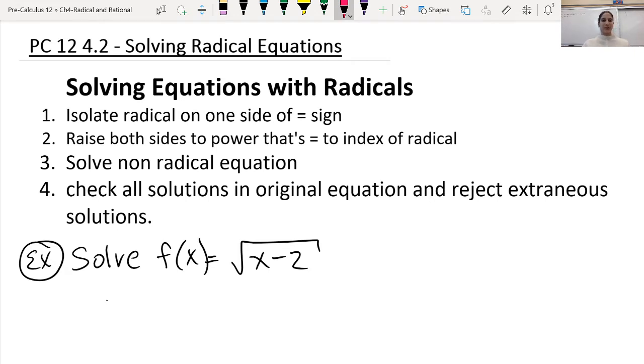We're going to start with the first example, solve f(x) equals root x minus 2. It says isolate the radical on one side of the equal sign.